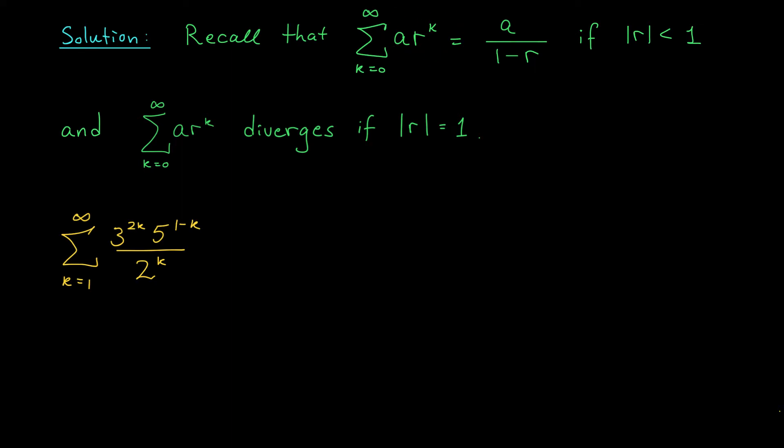but it's not exactly of the form a times r to the k. So maybe our first goal should be to rewrite this expression to look a little bit more like the geometric series that we have above. So let's start by looking at that 3 to the 2k term. Ideally, I'd like some number to the power of k appearing in my series. So I'm going to go ahead and